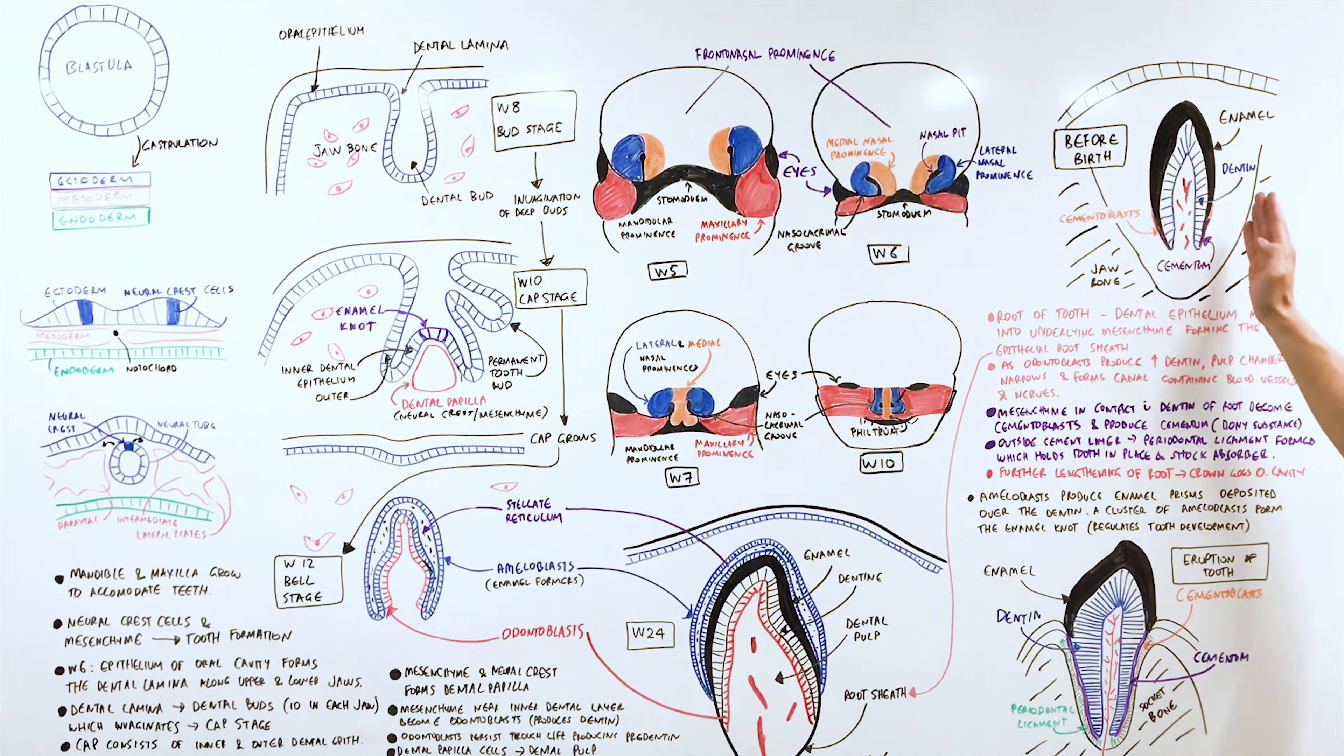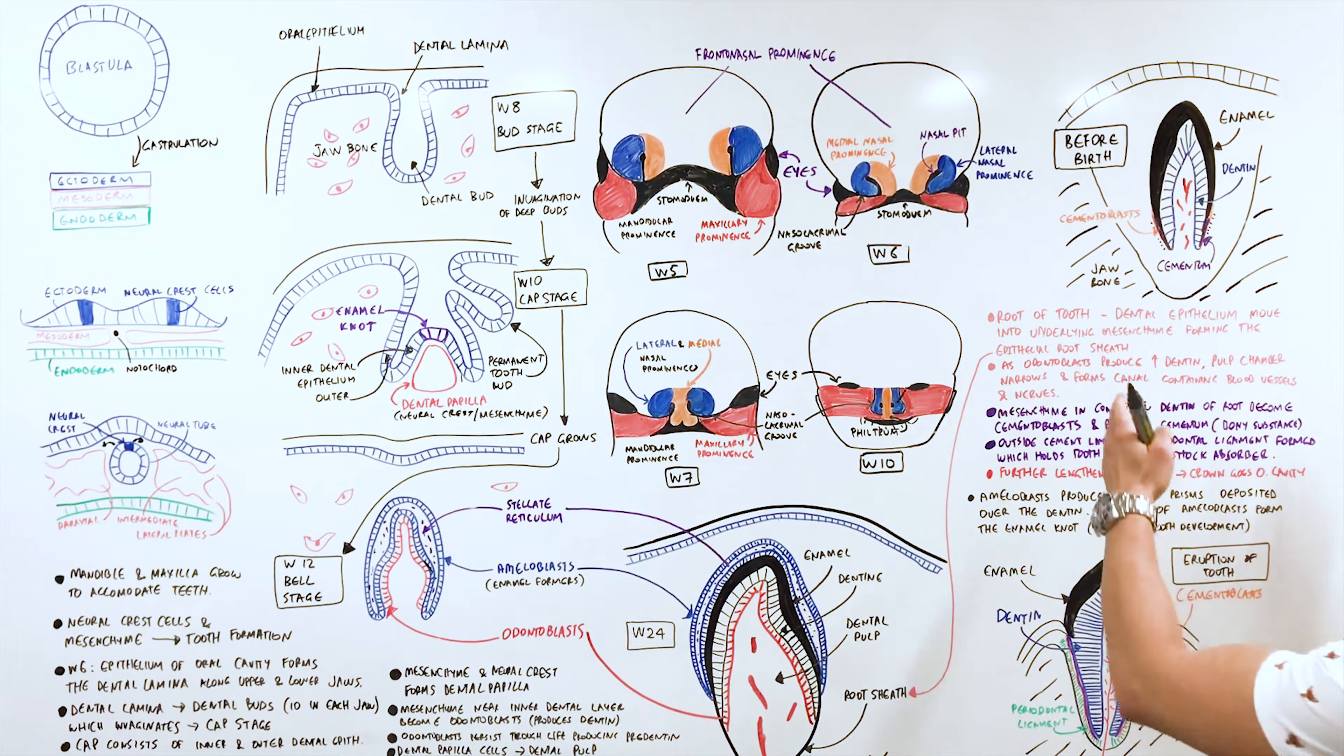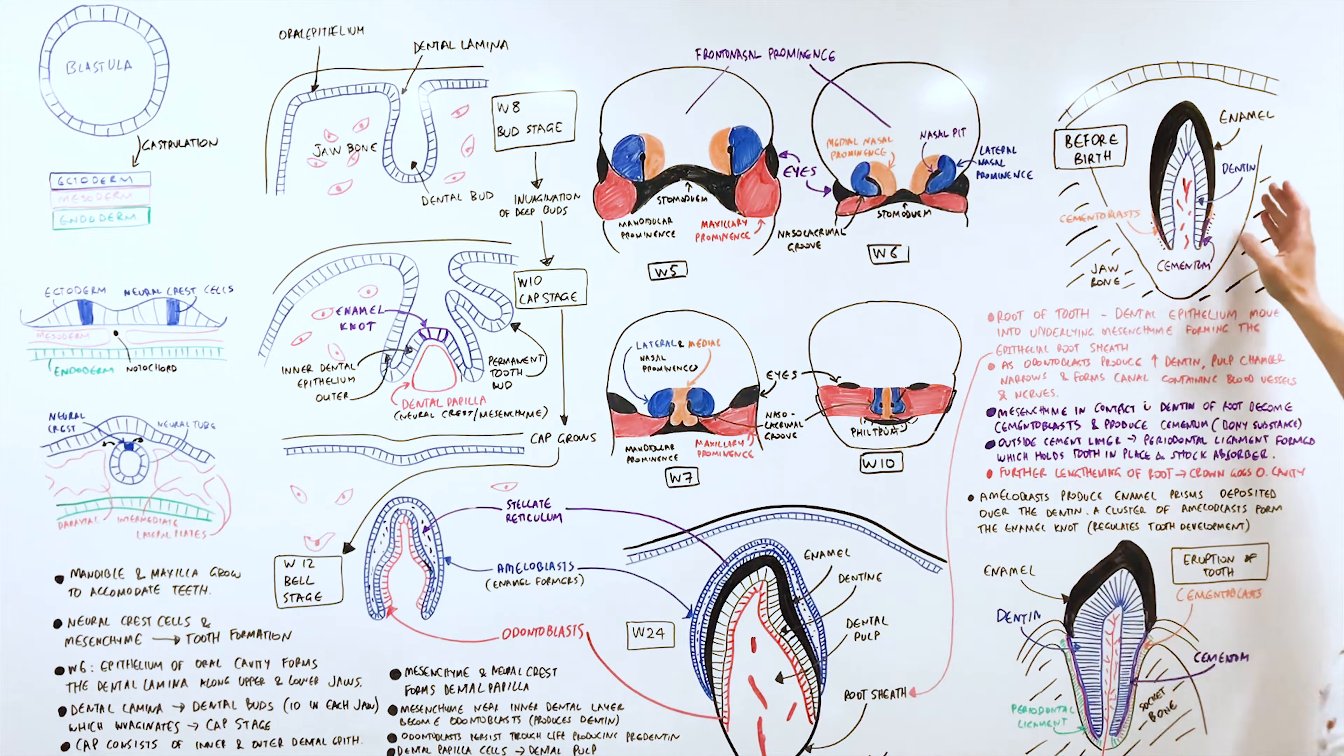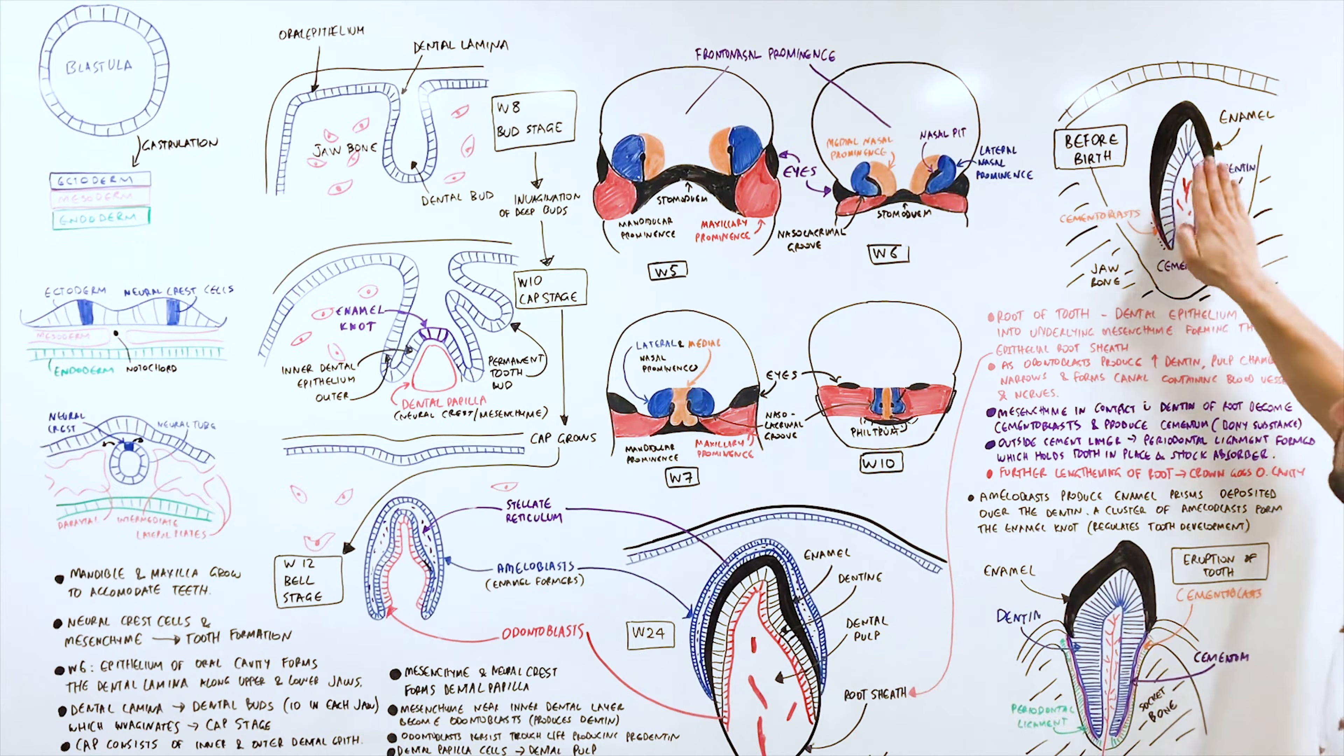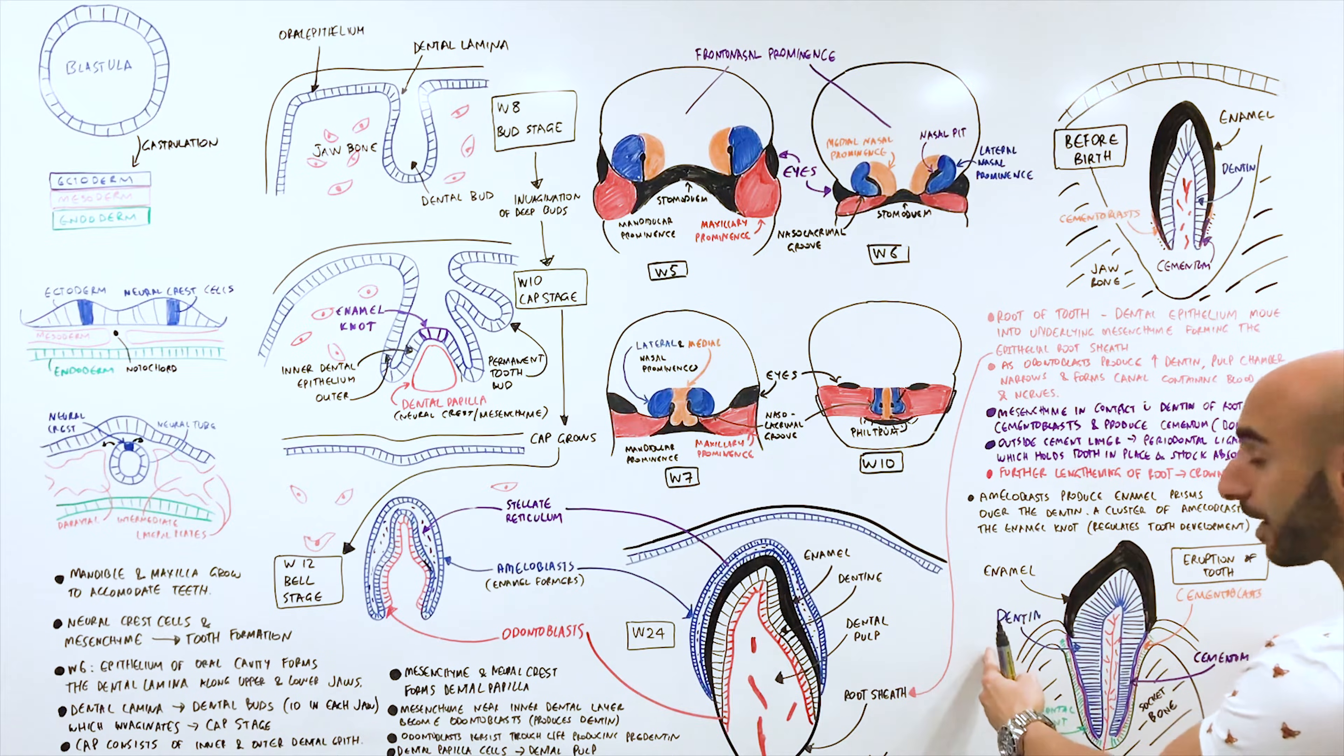On the outside of the cement layer we have a connective tissue growth called the periodontal ligament. This ligament holds the tooth in place and also acts as a shock absorber. Eventually with further narrowing of the root the crown gets pushed into the cavity and we will have the eruption of the tooth.